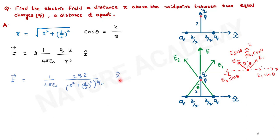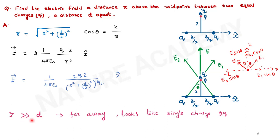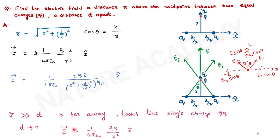The field is in the z direction only. When z is much greater than d, we are looking at the two charges from very far away and they appear as a single charge 2Q. The d term becomes zero, so E-bar equals 1 over 4π epsilon-naught times 2Q over z-squared times z-cap — consistent with a point charge of magnitude 2Q.